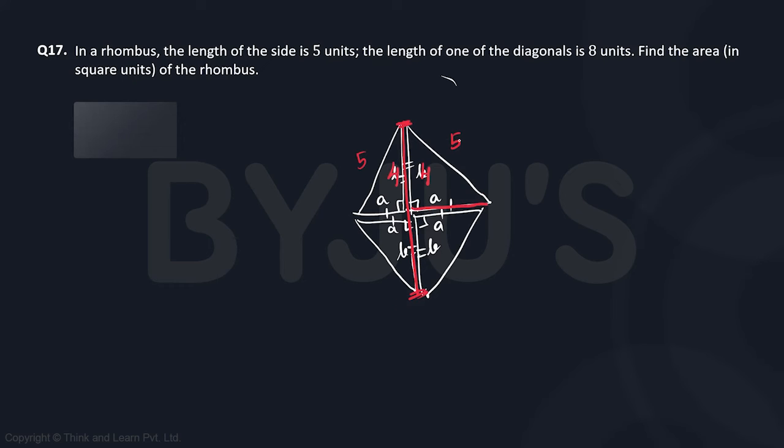So now we have a right angle triangle where the hypotenuse is five, one of the sides is four. Can we figure out the third side? Well, it's a triplet, right? So the other side of the right angle triangle turns out to be three.